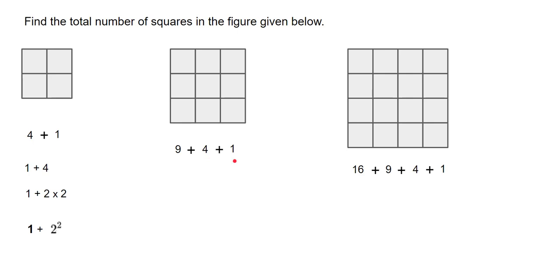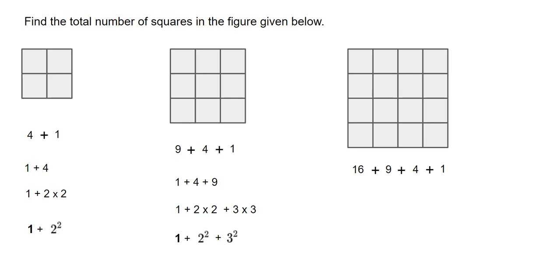Now we come back here and expand this. We reverse and write it as one plus four plus nine. You can see that one times one is one, two times two is four, three times three is nine. So this becomes one squared plus two squared plus three squared, or one plus two times two plus three times three.